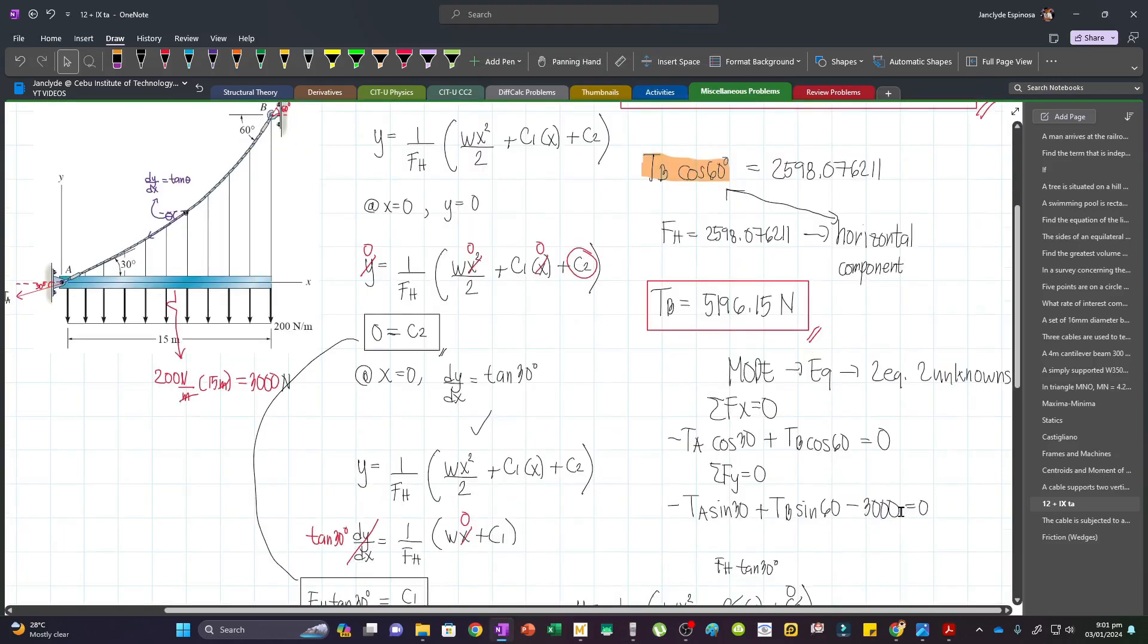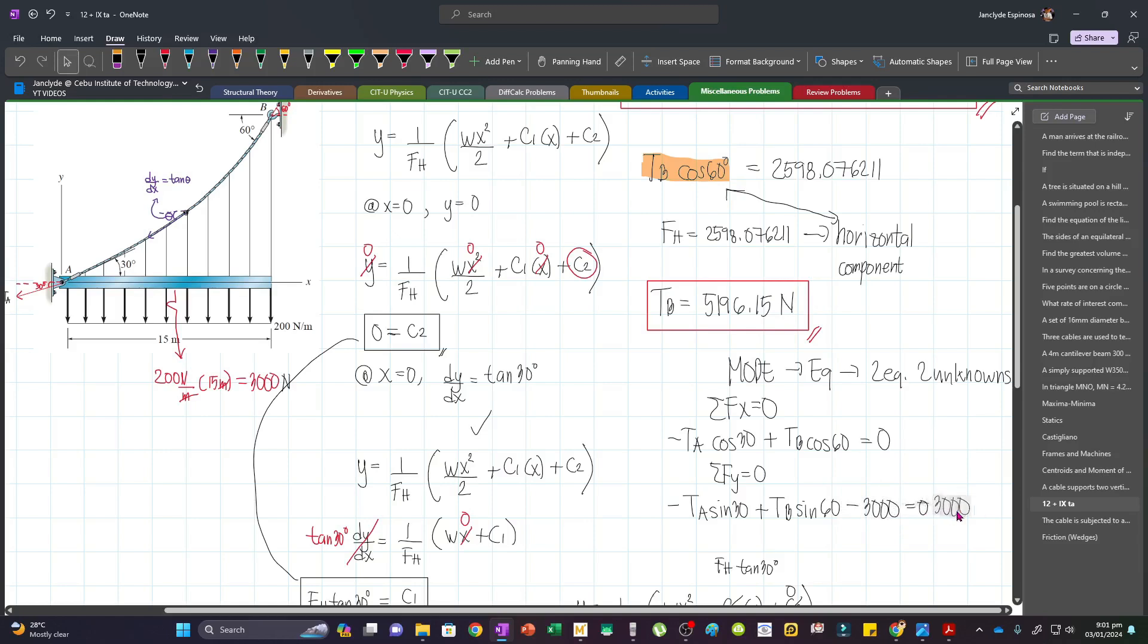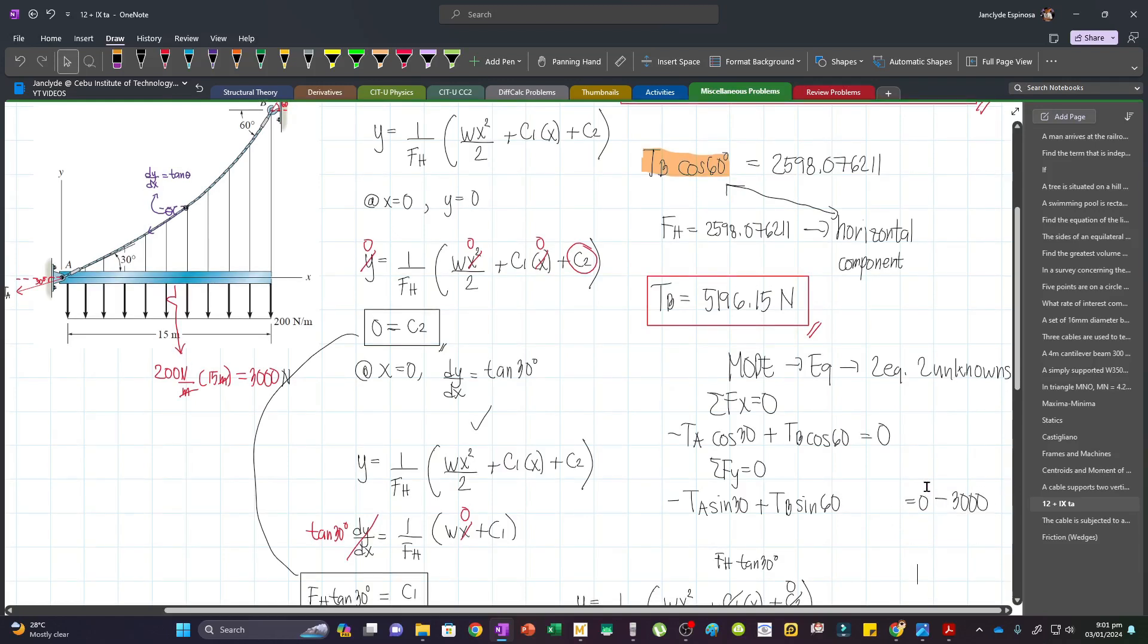So we need to transform this one into this equation. Our constant term should be at the right. So we can move 3000 to the right and it will change its sign. So instead of negative, this will be positive. We are essentially just transposing, and so we already have these two equations.